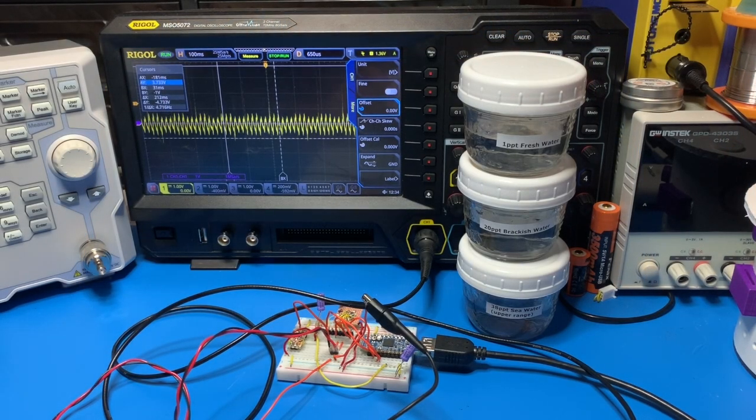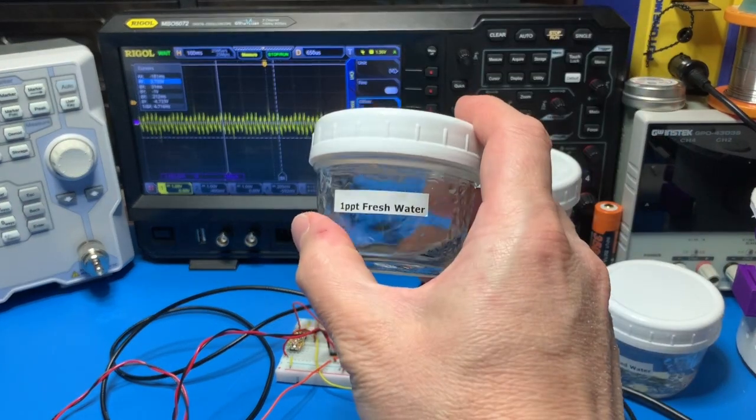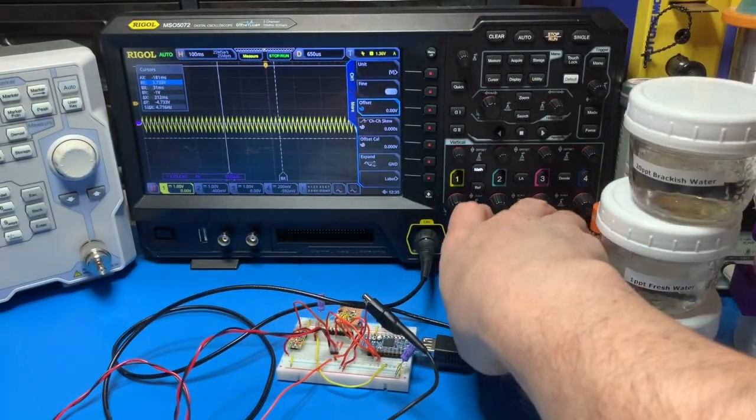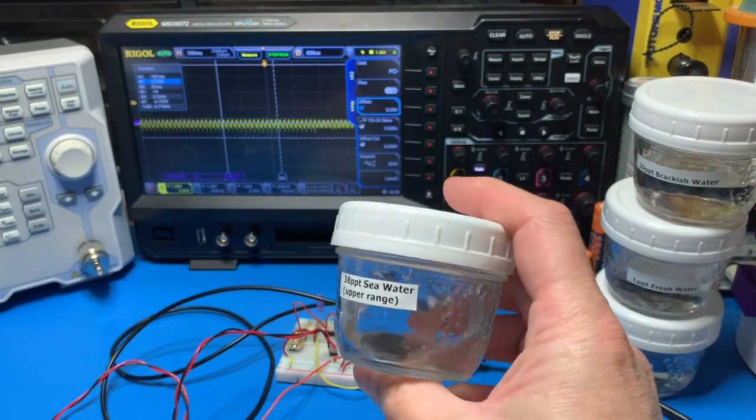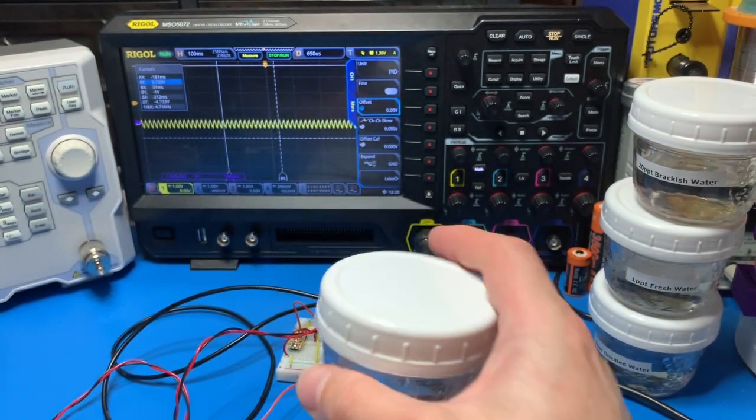So the first thing I had to do was make some calibration saltwater. Starting off with still water, I've got fresh water and I've got brackish water and finally seawater. To do that, what I've done is essentially just weighed out some salt and mixed it with distilled water.